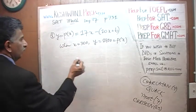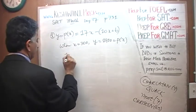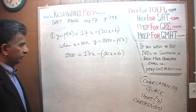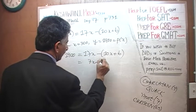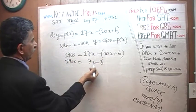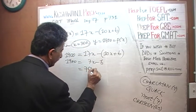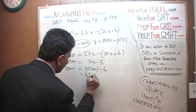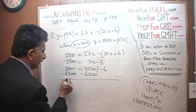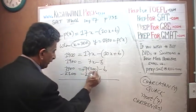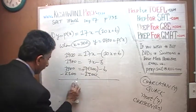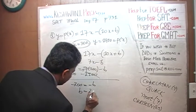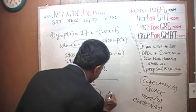They are asking for the value of B. So 1900 equals 17x minus (10x + B). Opening the parenthesis: 17x minus 10x is 7x, so 7x minus B equals 1900. And x is 300, so 7 times 300 minus B equals 1900. 7 times 300 is 2100. Subtracting 2100 from both sides gives us negative B equals negative 200, so B equals positive 200. The value of B is 200. The answer is E.